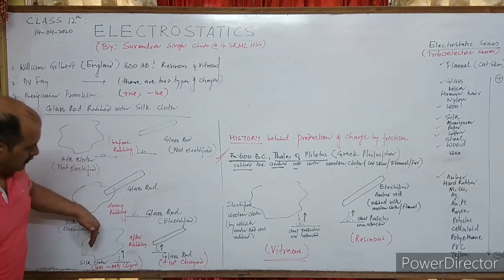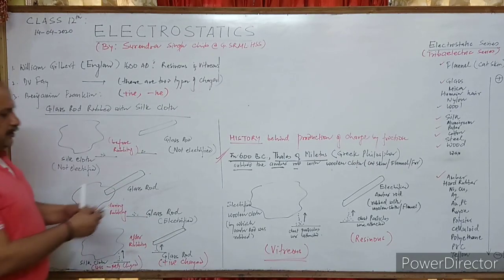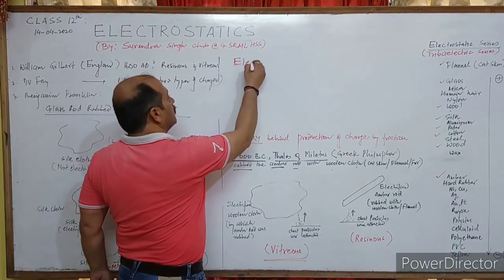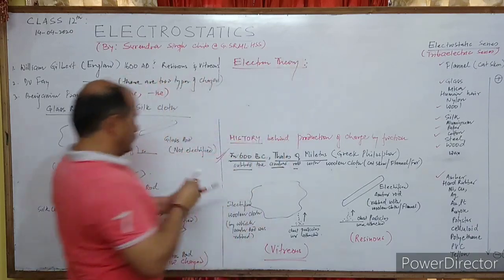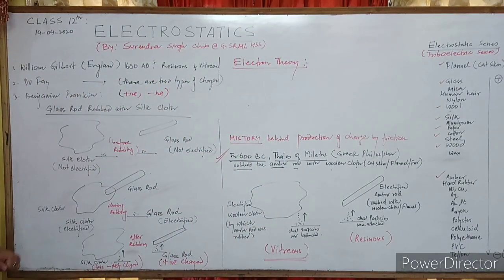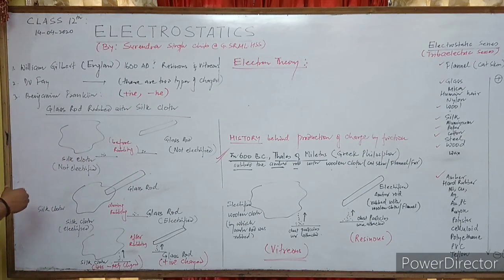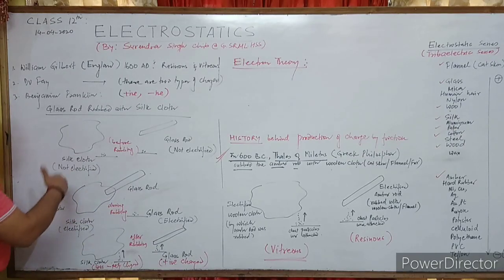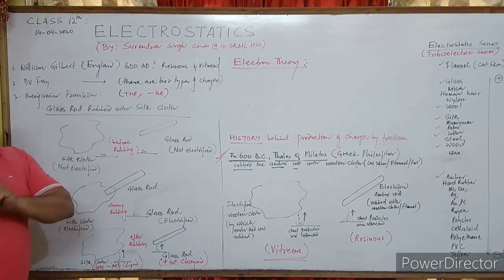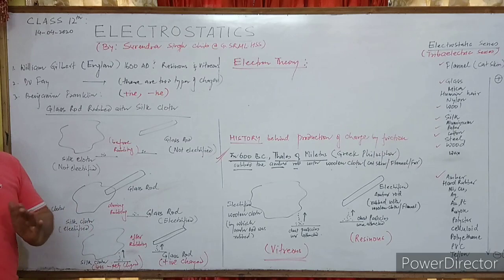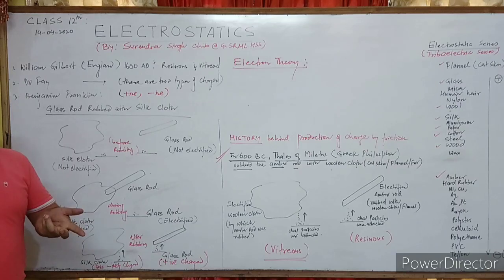How and why do these two bodies become positive and negative? Let me explain — this is called the electron theory. The electron theory explains all these things. When we rub two bodies, electrons may get transferred from one body to another. An atom is neutral because it has an equal number of protons and electrons revolving around the nucleus.